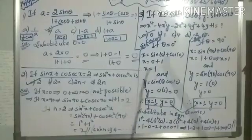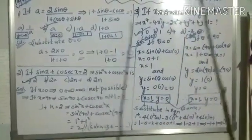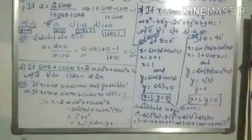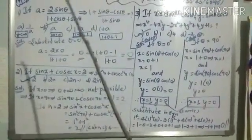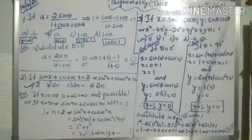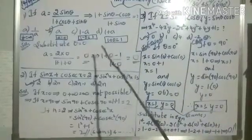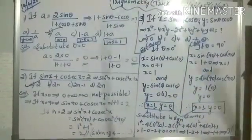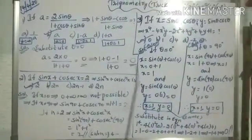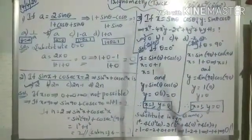Understood? Simple trick here. No need to solve anything bigger. Easily, if we know this table — sin 0, cos 0, 90 degrees, all those values — we can say the answer easily.